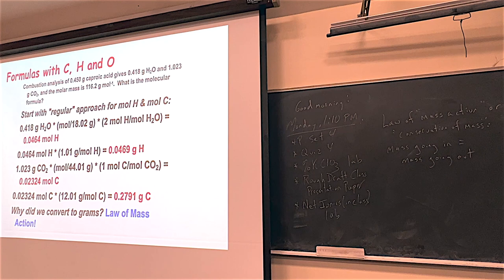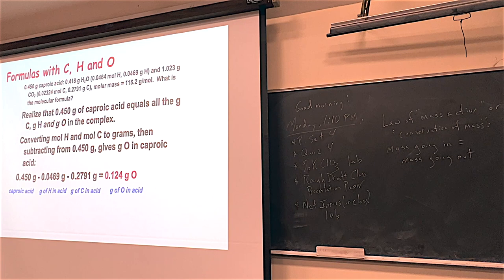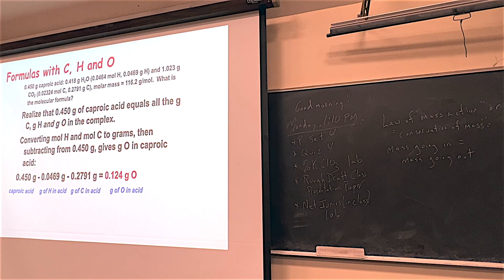On this next page, what we're doing is taking the whole mass of the sample and subtracting the grams of H and C that we calculated on the last page. These two numbers are less than the total, and the difference — which in this case is 0.124 grams — represents the oxygen in the caproic acid. It's not the oxygen from the O2. We are trying to find the formula for the CHO.